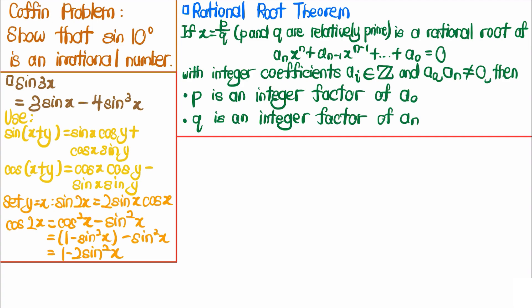The angle sum formulas are: sine(x + y) = sine x · cosine y + cosine x · sine y, and cosine(x + y) = cosine x · cosine y − sine x · sine y. If we set y equal to x in these two angle sum formulas, we get the well-known double angle formulas for sine and cosine, which we will use later.